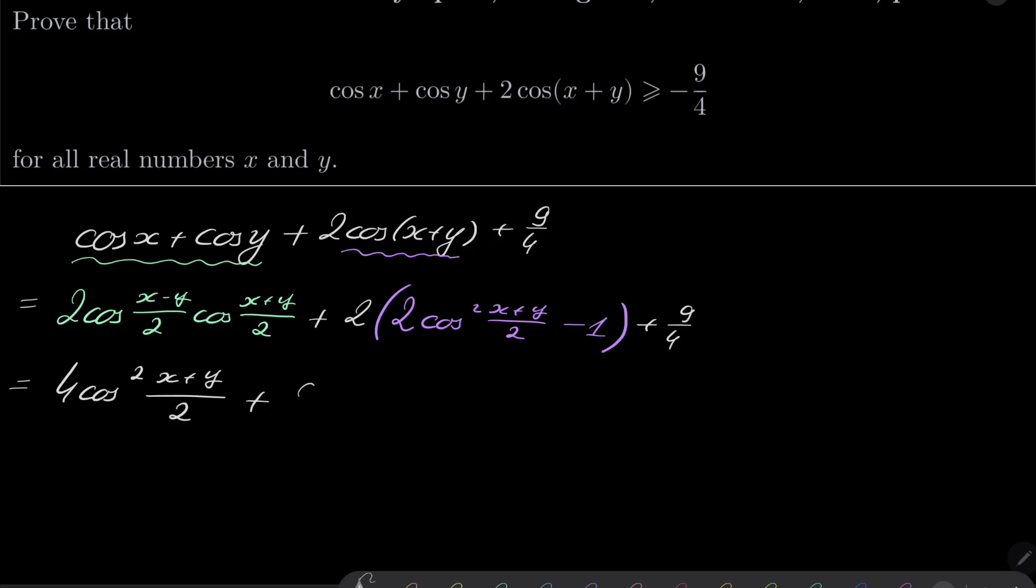We have plus 2 cosine of (x minus y) over 2 cosine of (x plus y) over 2. And we have minus 2 plus 9 over 4, so we have to add plus 1 fourth.